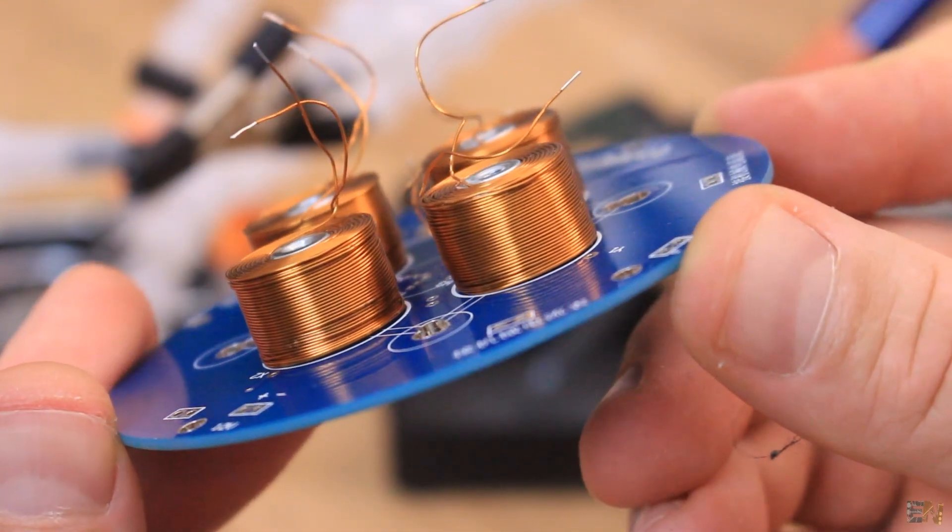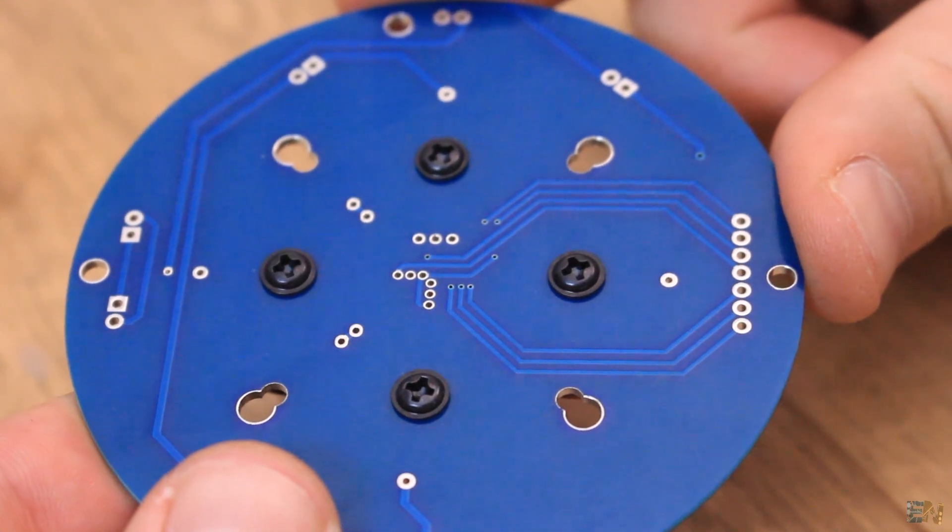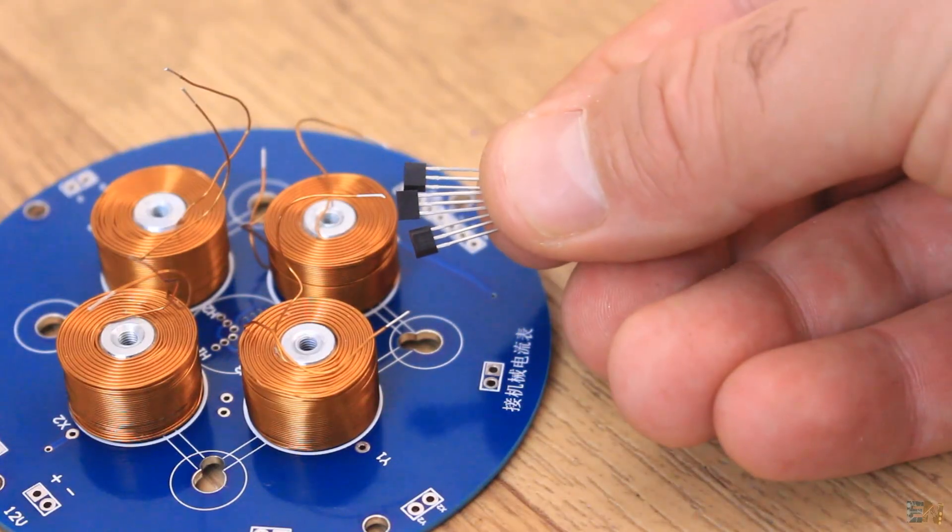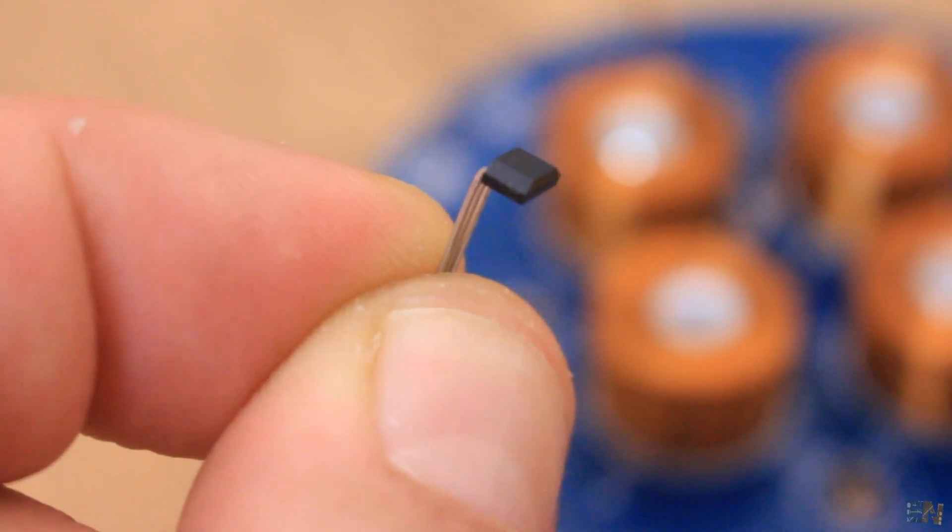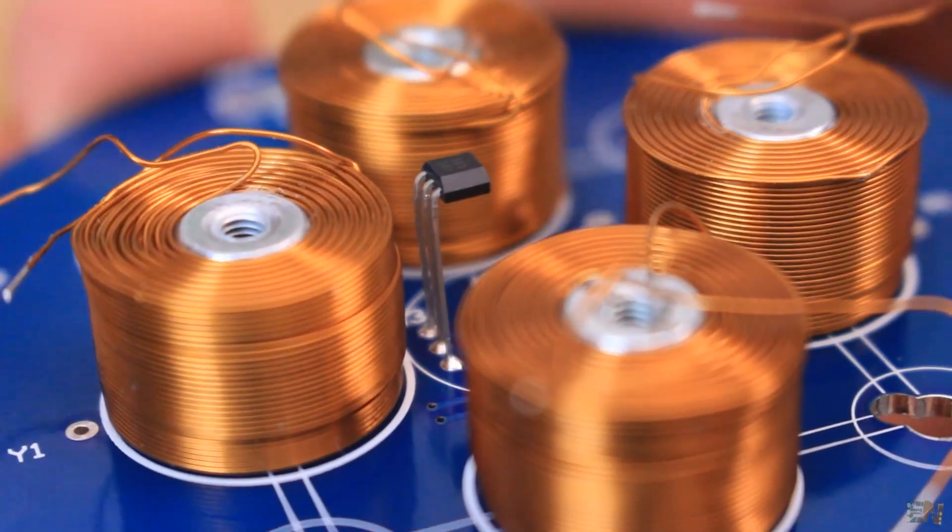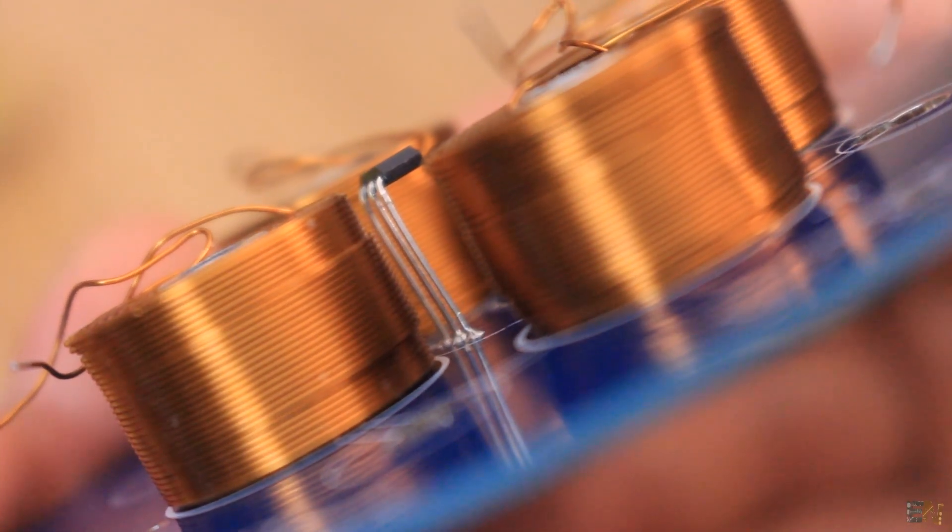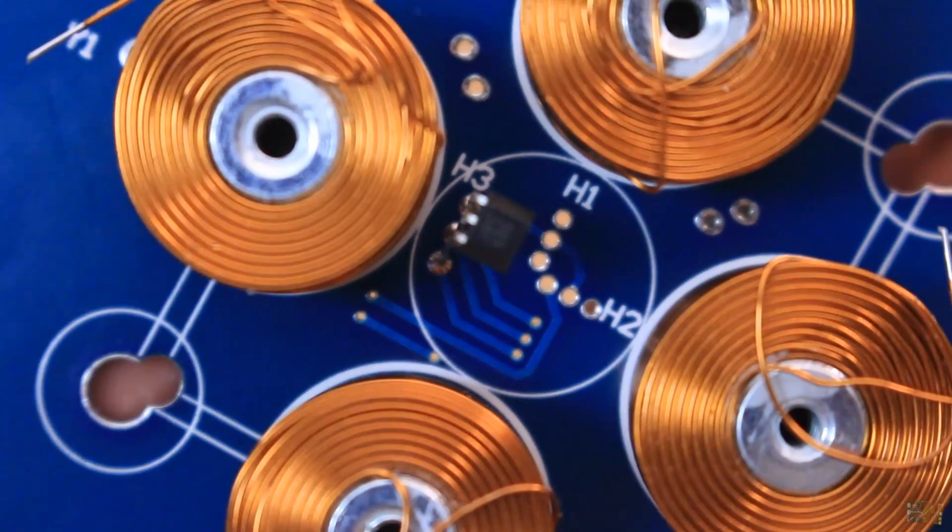We had to place the coils first in order to know the height of the hall sensors, so now let's add the sensors. For that, we first bend one sensor 90 degrees with the sensing part facing up. Then we solder that on sensor 3 at the same height as the coils. This will be the Z axis sensor.